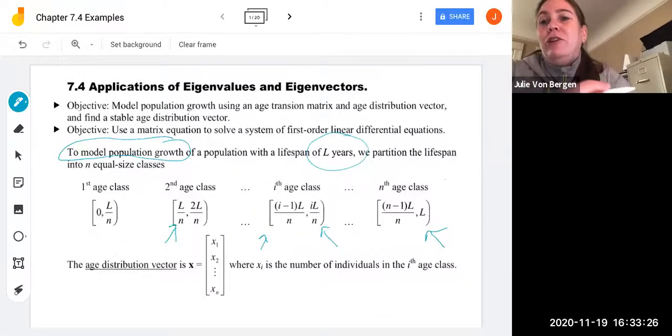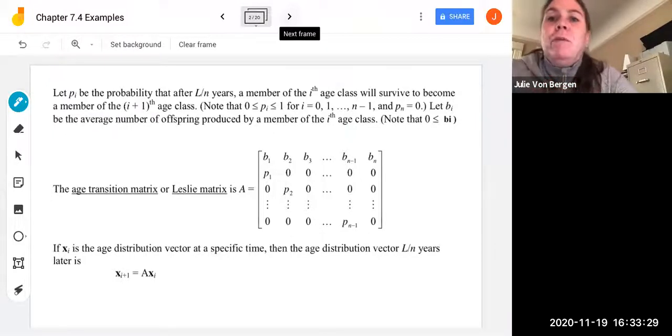So we're going to see how we can model population growth from age classes. Pi is going to be the probability that after l over n years a member of the ith age class survive to become a member of the i plus one stage class. And important to note that the p's are between zero and one because of probabilities. Of course we wouldn't have negative probability we wouldn't have probability over 100% for all of the i's. And then the p nth value is zero. So that's because we're at the end of the lifespan and presumably we're assuming the end of the lifespan is a max for whatever we're measuring. It's not going to be able to live past that.